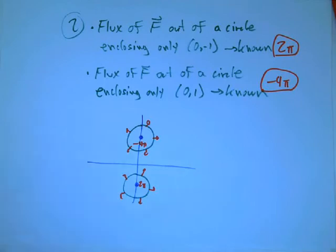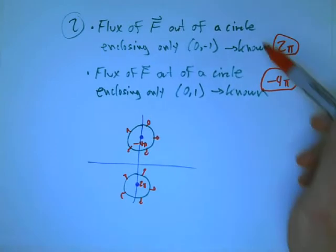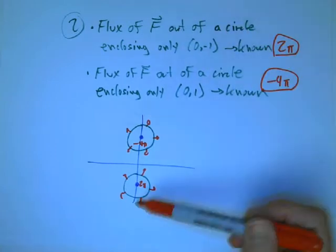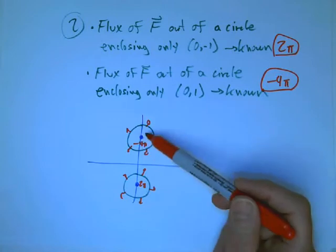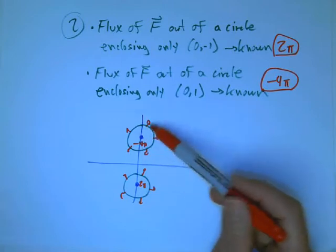This should be the last of this sequence of videos. I found my sheet and I remembered what numbers I put on the handout. The flux out of the circle down here is 2π, and the flux out of the circle here is minus 4π.